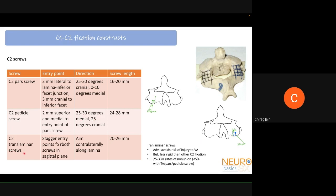A C2 translaminar screw is placed through the junction of the spinous process and lamina into the opposite side lamina. Both screws, if placed, should be staggered vertically, with a length of 20-26 mm. The advantage is avoiding vertebral artery injury, but it is less rigid than other C2 fixation options — with a 25-33% non-union rate, compared to less than 5% failure with other C2 screw types.